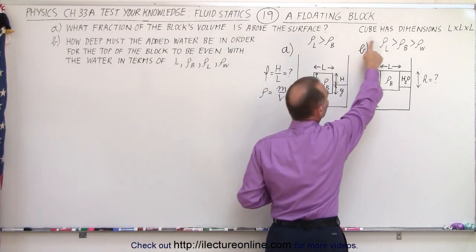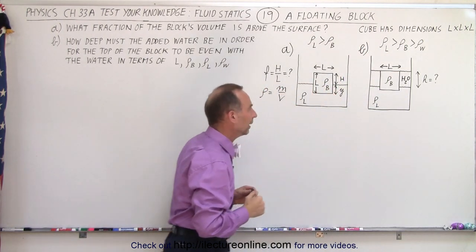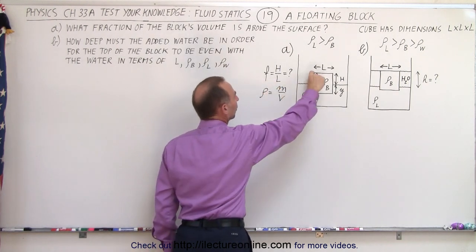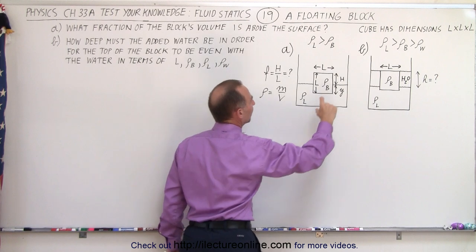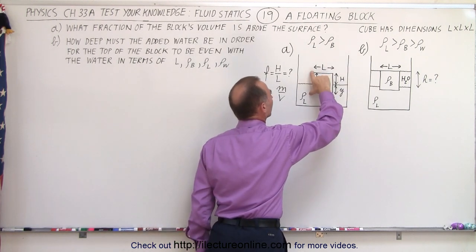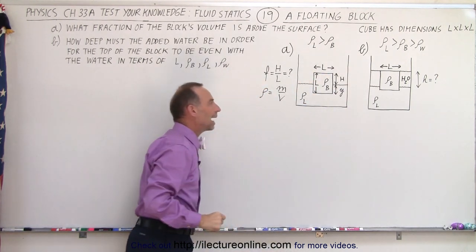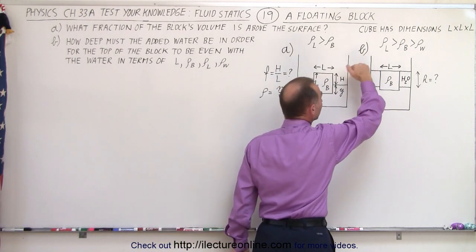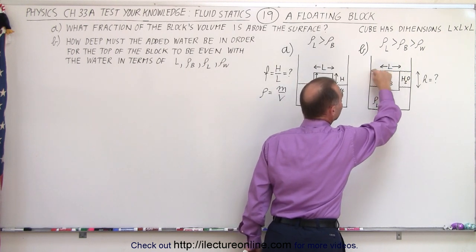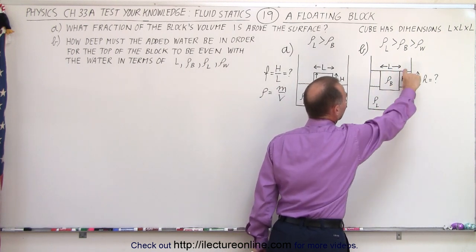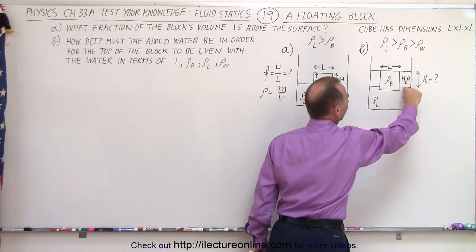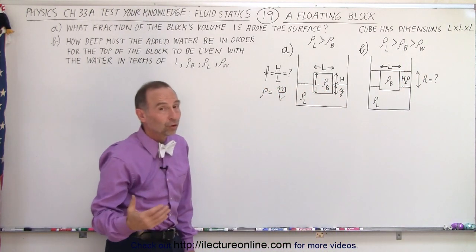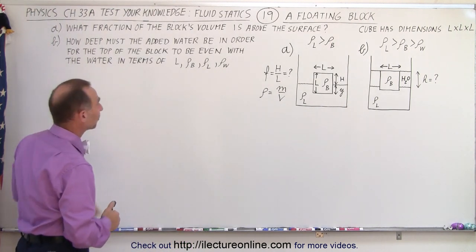The block is in the shape of a cube and has dimensions L by L by L. For Part A, we're supposed to find the fraction of the block that's above the surface of the liquid — basically the ratio of H divided by the height of the block L. For Part B, we're going to add water such that the water level at the top is equal with the block, and the question is what will be the height of that water level from the top of the liquid to the top of the block.